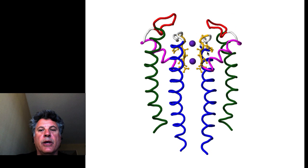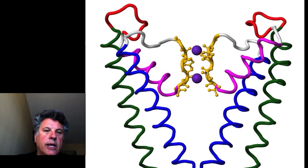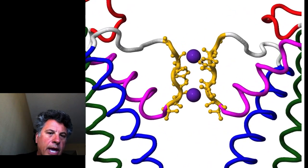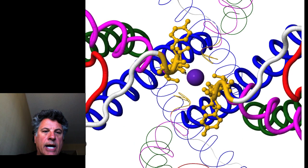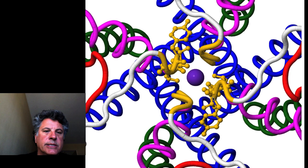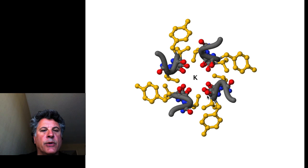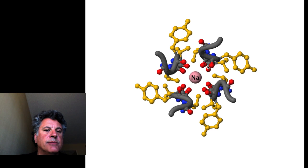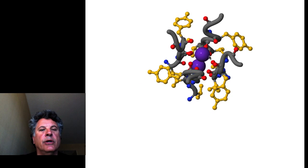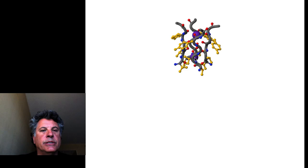The selectivity filter has main chain atoms — the carbonyl oxygens on the main chain, not the side chains of amino acids — which interact with the positively charged potassium ions, and these carbonyl atoms are shown in red. In the selectivity filter, it is the interaction of those main chain oxygens that interact with potassium, but sodium is too small to interact with those oxygens. And so this accounts for the selectivity of this ion channel for potassium over sodium.